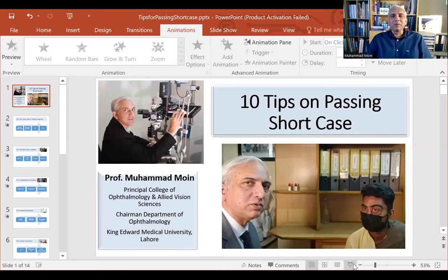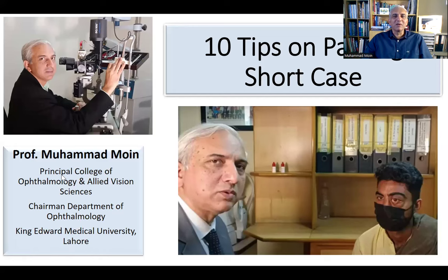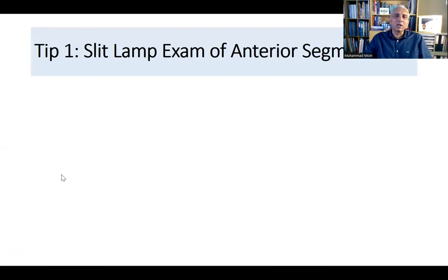When you sit with the patient, introduce yourself, take consent, and start off the examination. You need all the tools for that examination — especially at the slit lamp, you need your 90D or superfield lens, rulers for orbital measurements, and prisms for squint examination, which will be provided.